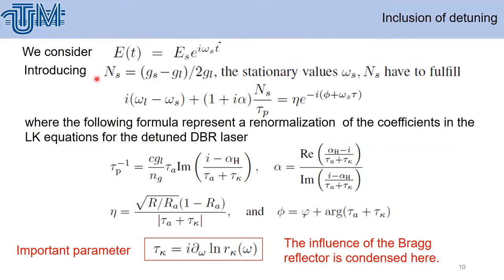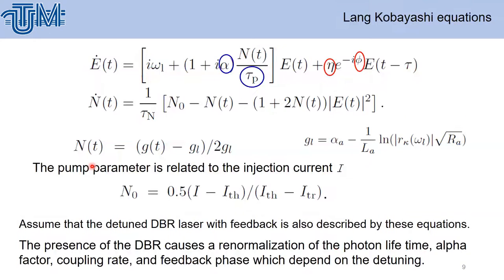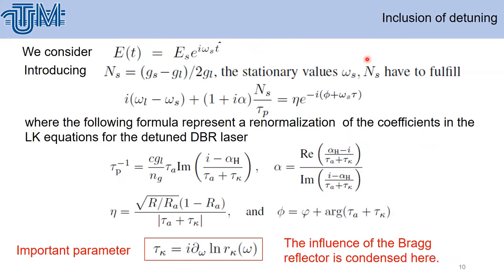We introduce the stationary value for omega_s and n_s, and the following formula represents a renormalization of the coefficients in the Lang-Kobayashi equations. In our case, all four parameters depend on the detuning. Here we show how these parameters depend on the detuning and provide their values. The influence of the Bragg reflector is considered in the parameter tau_kappa. If tau_kappa equals zero, one obtains the well-known coefficients for a Fabry-Perot laser with length L_R.